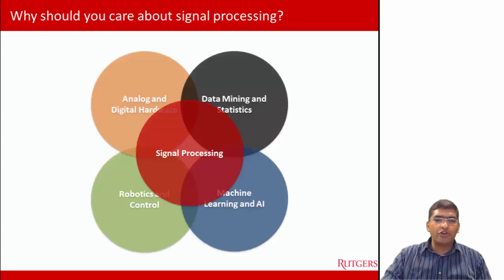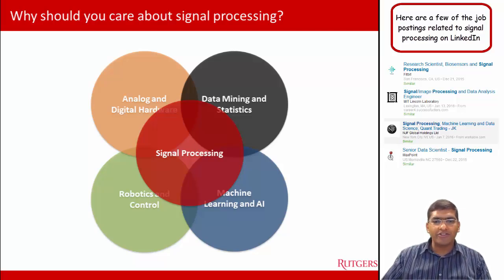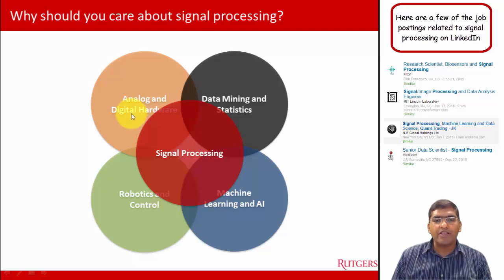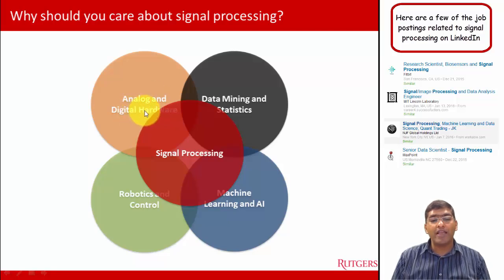Let's first talk about some of those areas of intersection. The areas are numerous, but here I have listed down four specific areas. One of them is digital and analog hardware. There are many applications that rely on signal processing and also need hardware, so you could be an expert in hardware and also be using signal processing.